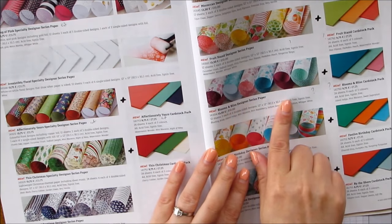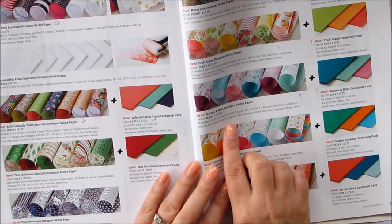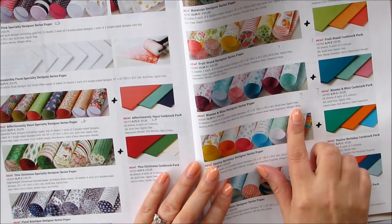So basically, the Blooms and Bliss Designer series papers tells you the colors that's in it. There's Blushing Bride, Island Indigo, Mint Macaron, Rich Razzleberry, Sahara Sand, Sweet Sugar Plum and the Whisper White.